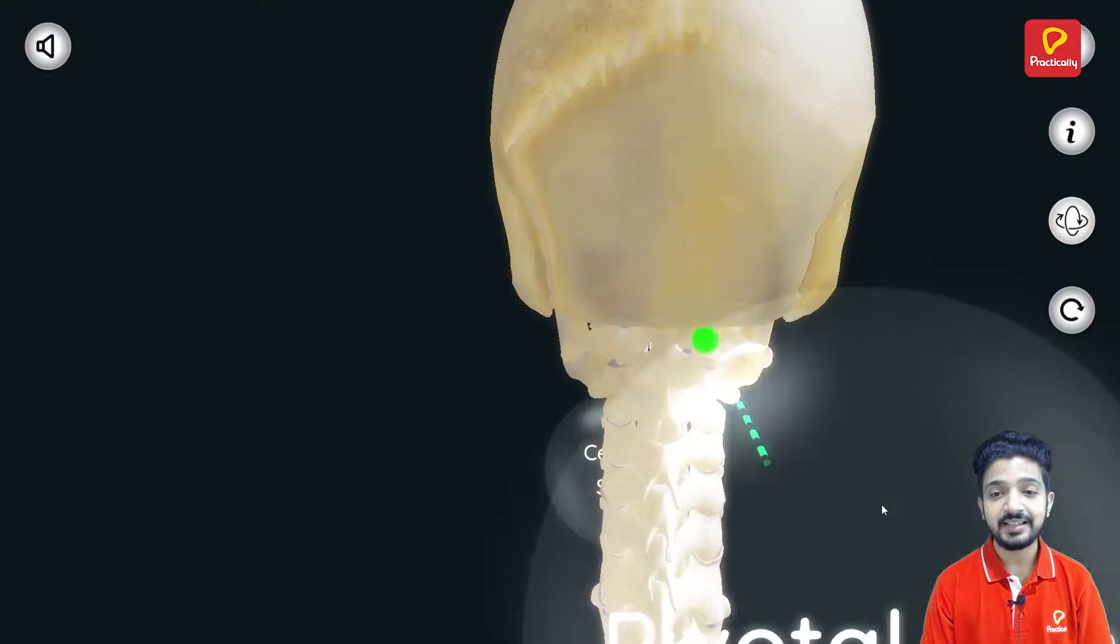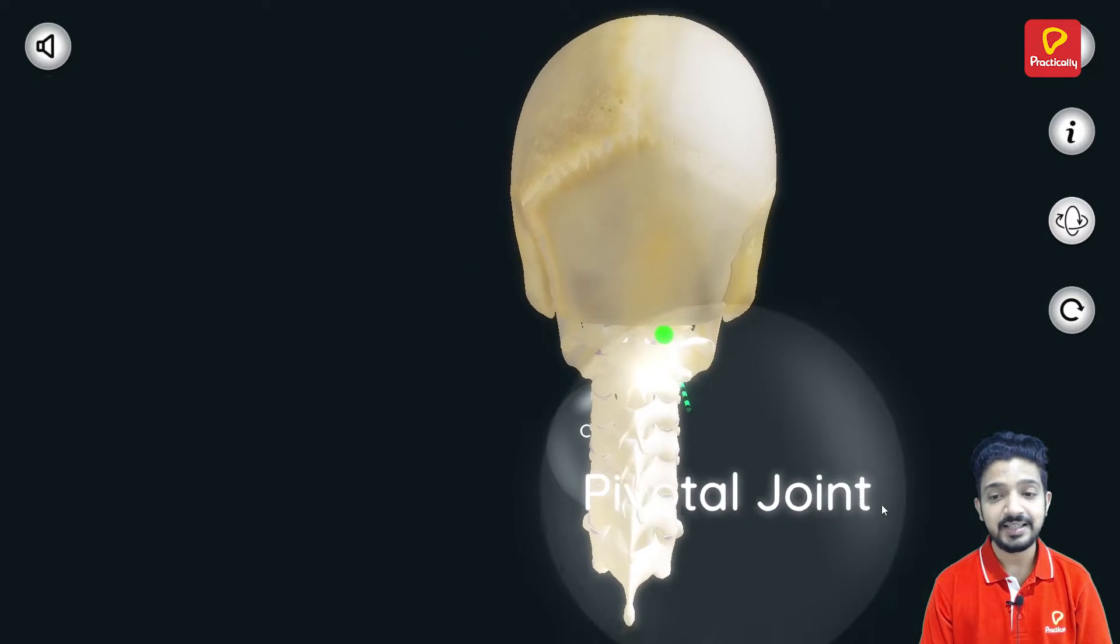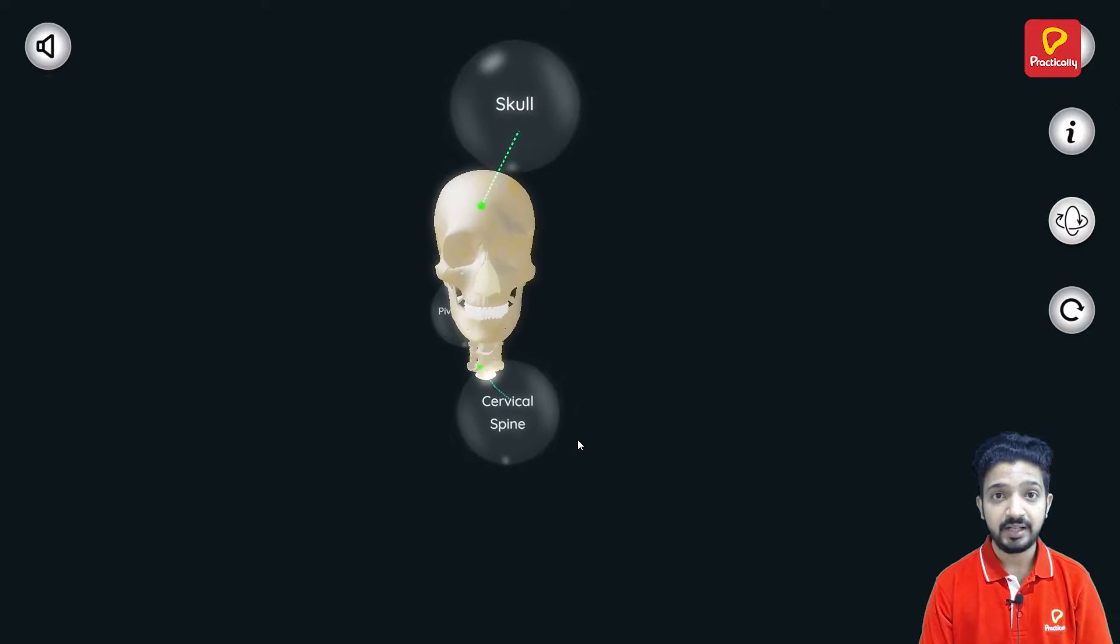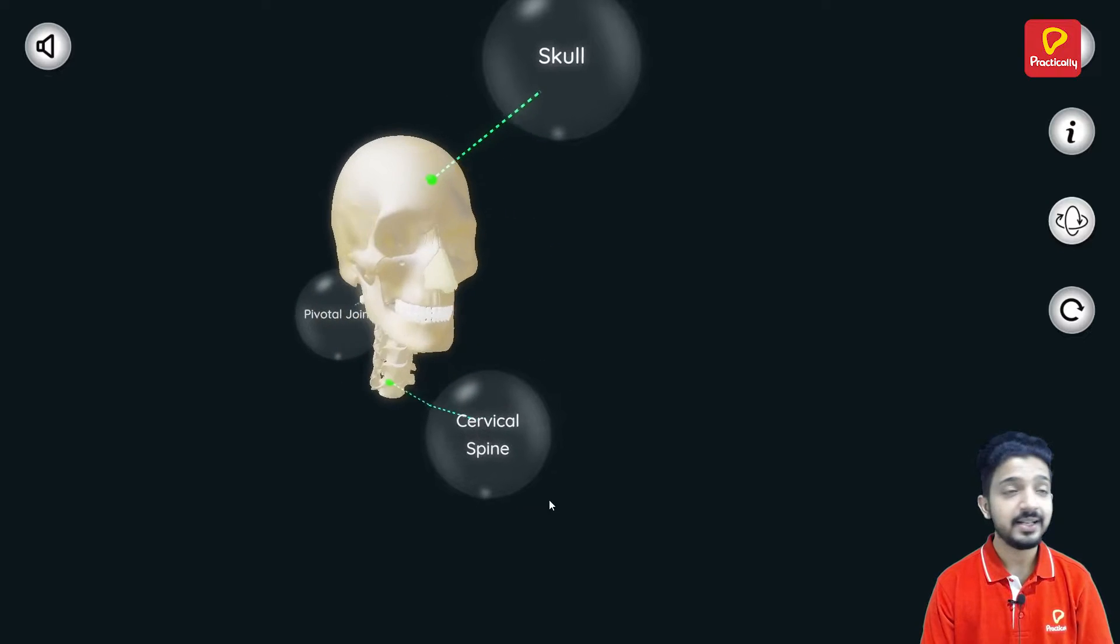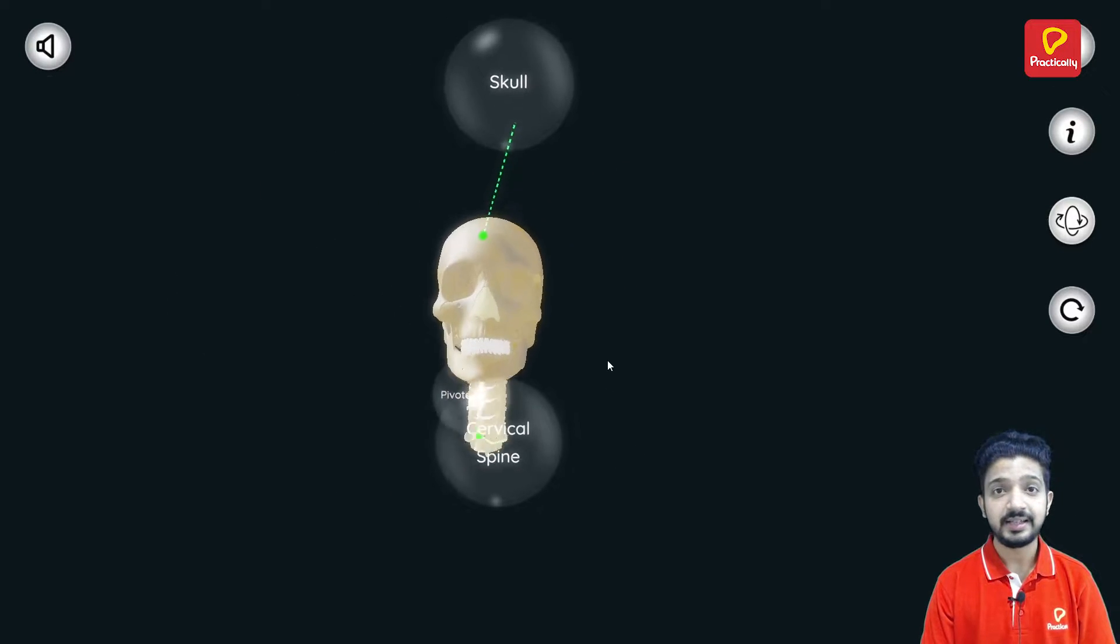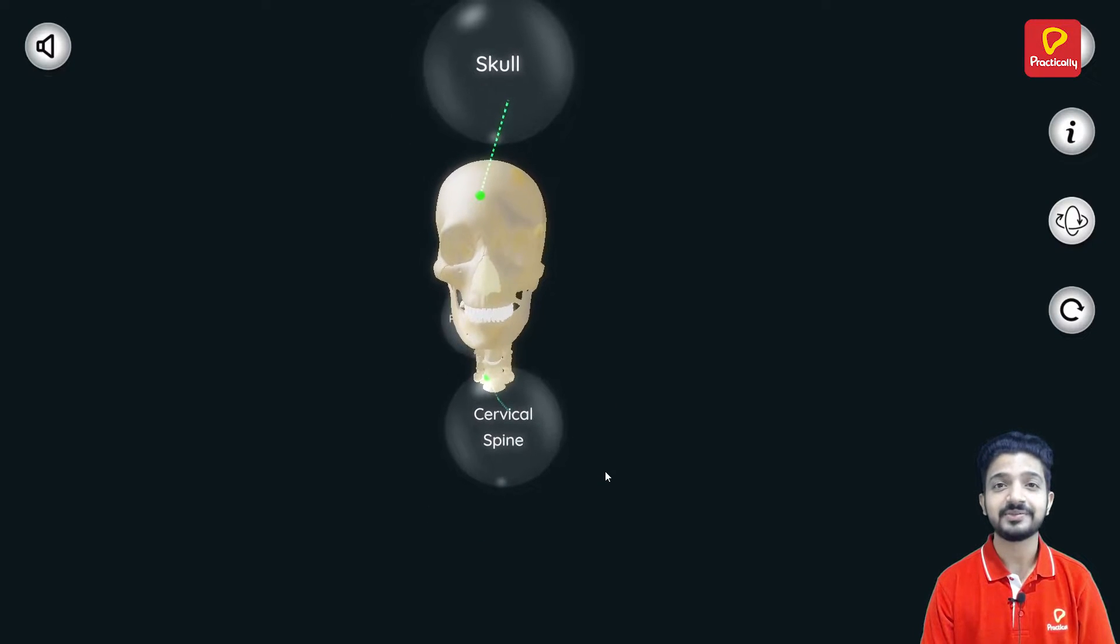As you can see here, this is the pivotal joint. And this type of joint allows the movements either sideways or the up and down motion around a pivot.